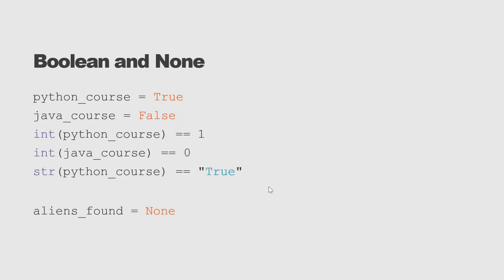The boolean data type has some examples. You have 'python_course = True' or 'java_course = False'. You can also set booleans as numbers: 'python_course = 1' means True. You can also put it as a string: 'string True'. There is also 'None' — for example, 'aliens_found = None' means you are not declaring the variable with a meaningful value.